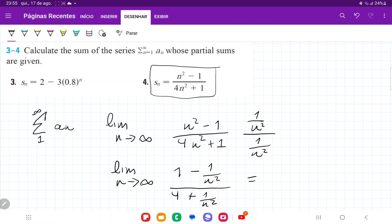When we take this limit, the limit of 1 is just 1 minus 1 divided by infinity, that's going to be 0 over the limit of 4 is just 4. And then plus 1 divided by infinity is plus 0. So this is going to give us 1 fourth.